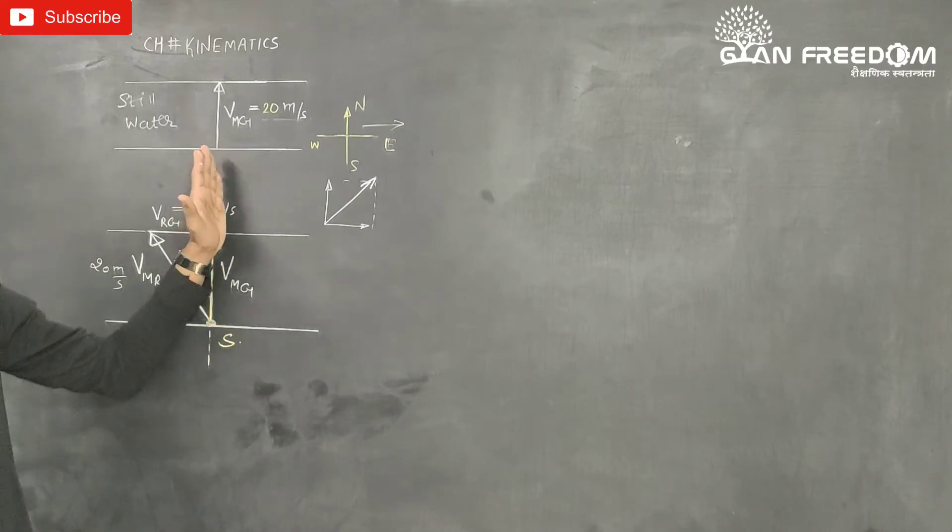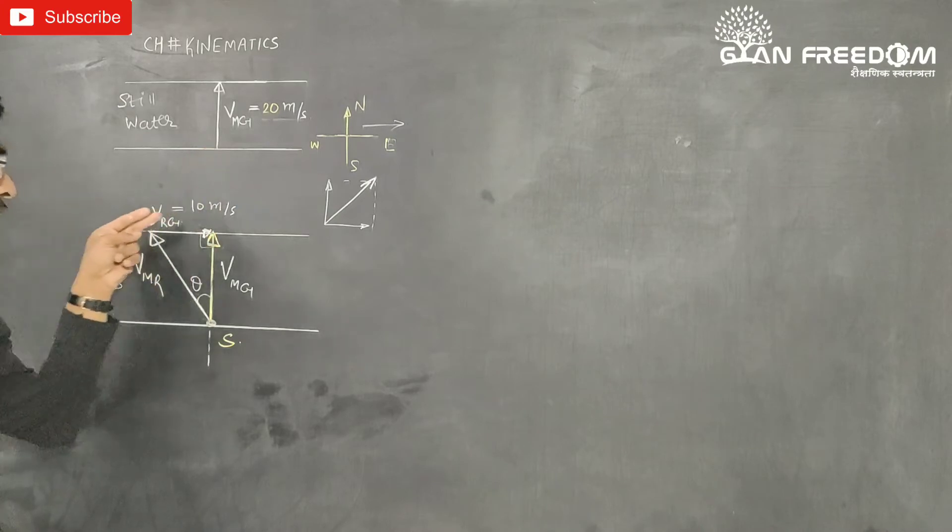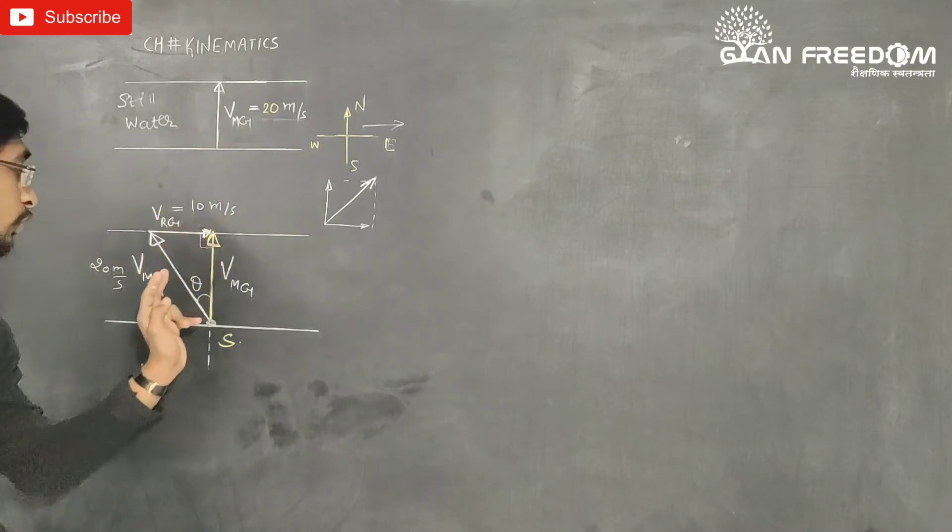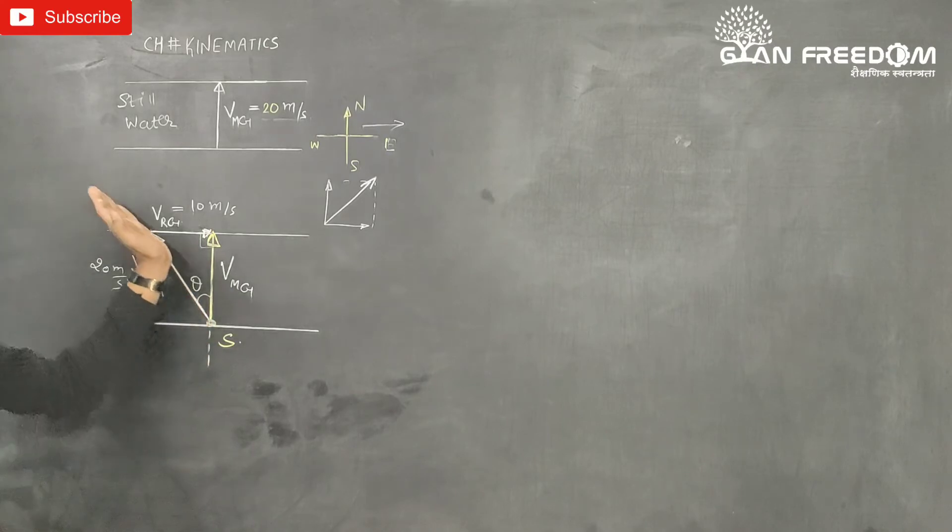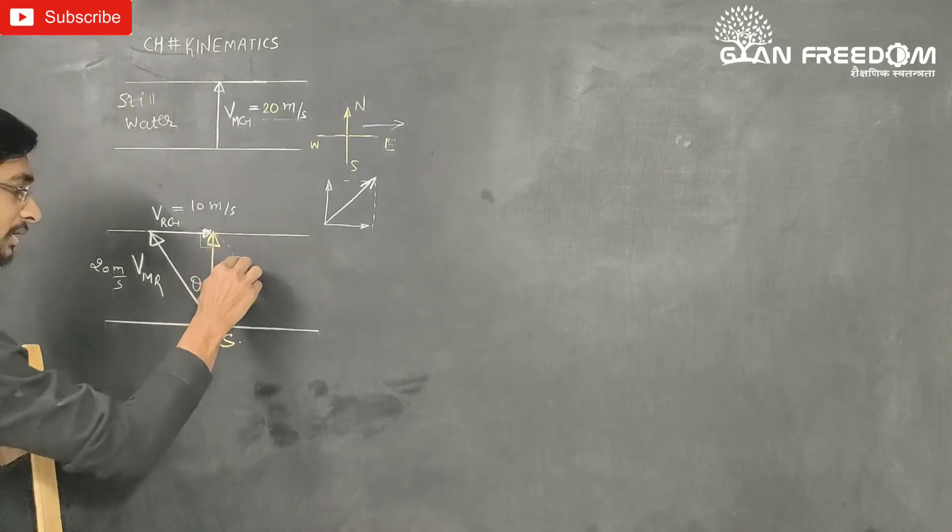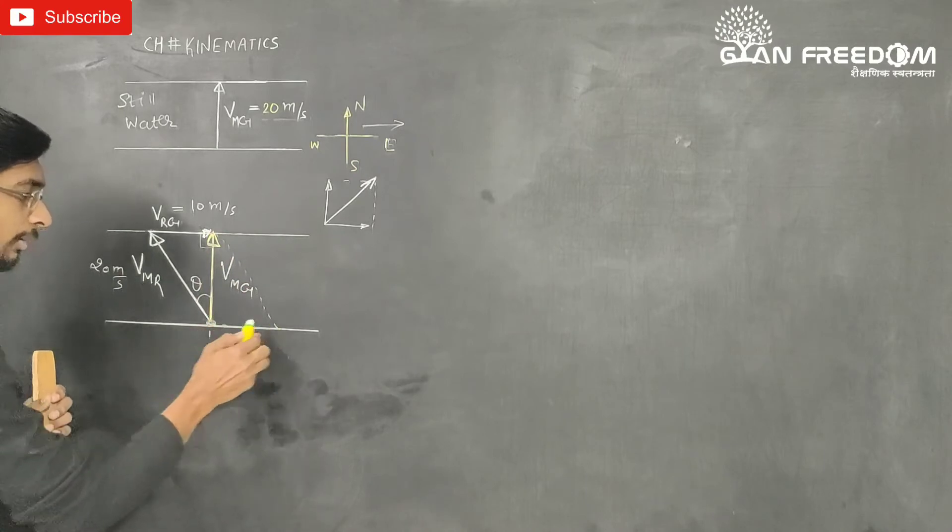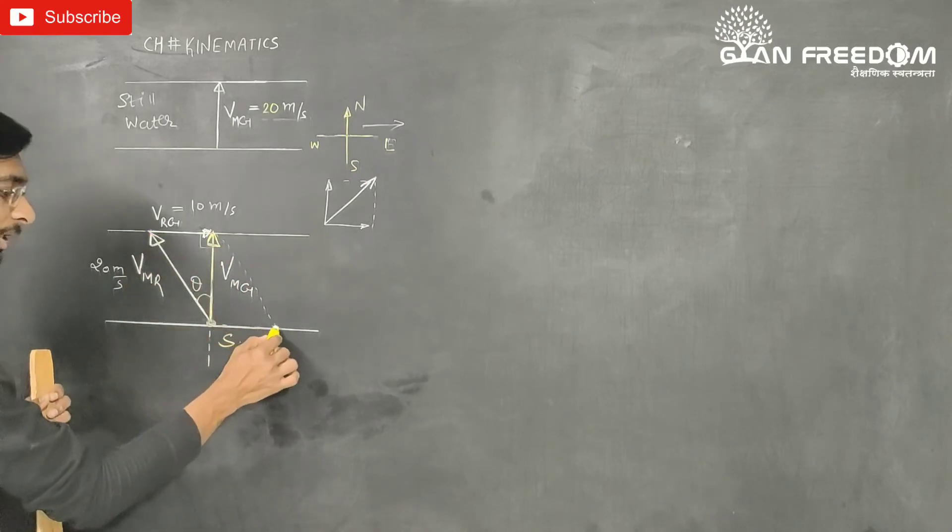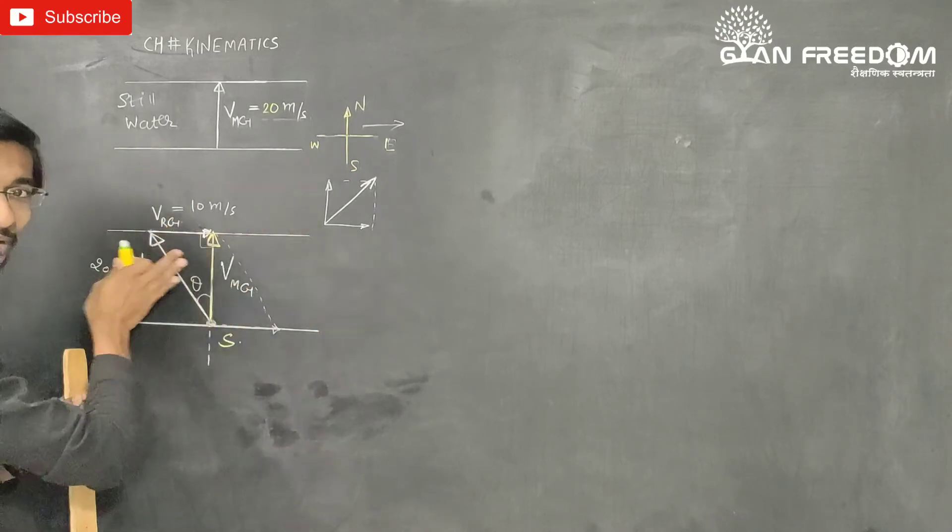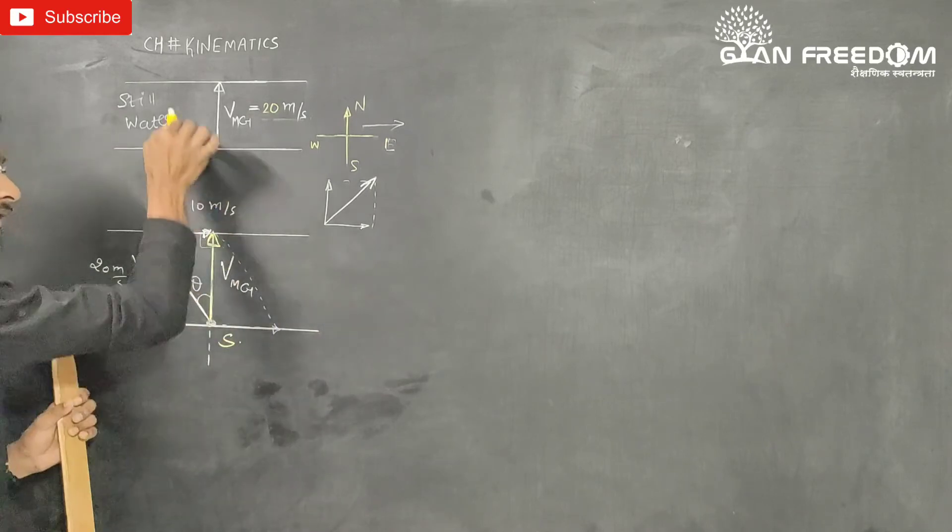Because if we have a resultant there, when the resultant here, the river does it, the man's velocity should have there. Then it should be resultant here. If we move the resultant, then with parallelogram, you can make these parallelograms. This is the river, it should be the theta.